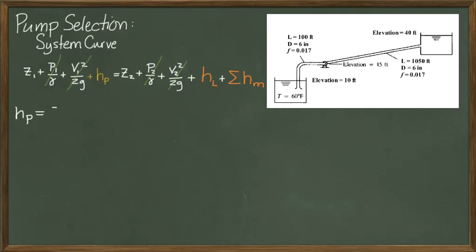So we can solve this equation for what is often referred to as the pump head by moving Z1 over to the right hand side and being left with these terms: Z2 minus Z1 plus the friction head loss plus the minor head losses.